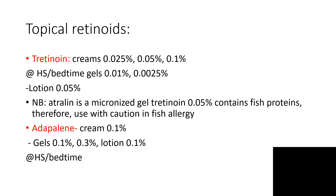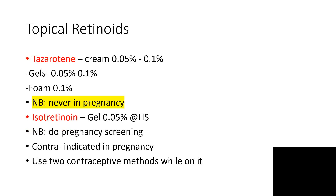Topical tretinoin cream 0.025% up to 0.1% — use at the hour of sleep. Adapalene can also be used at the hour of sleep. Use adapalene cream or gel; for the foam, never use in pregnancy. Azotretinoin gel — please do pregnancy screening; it is contraindicated in pregnancy.